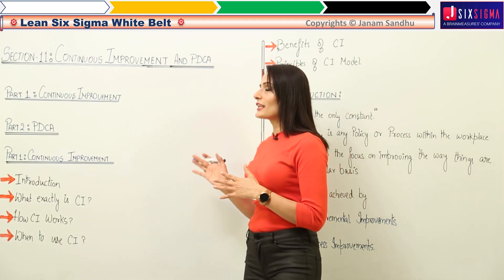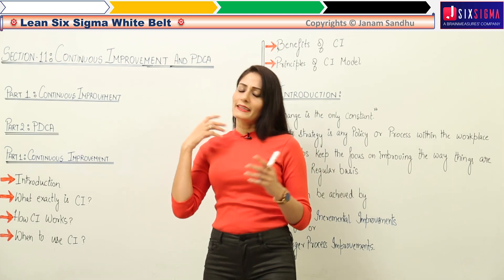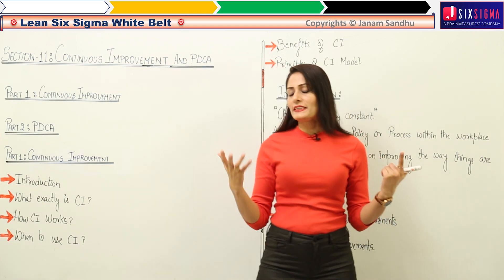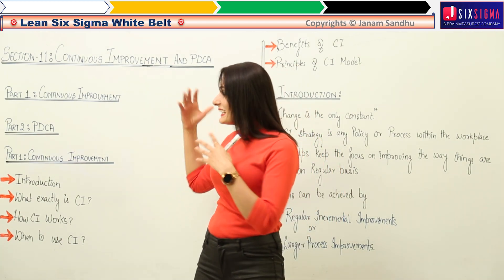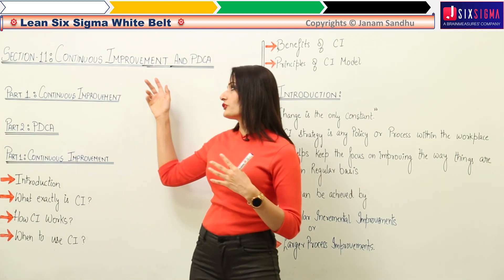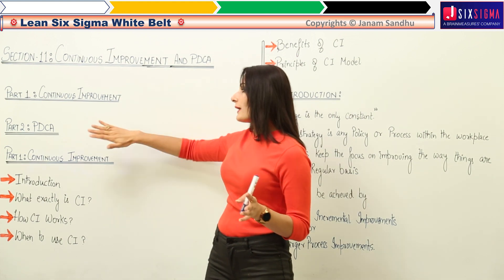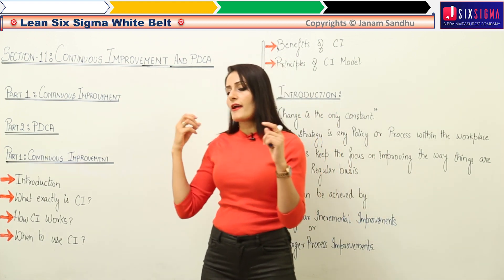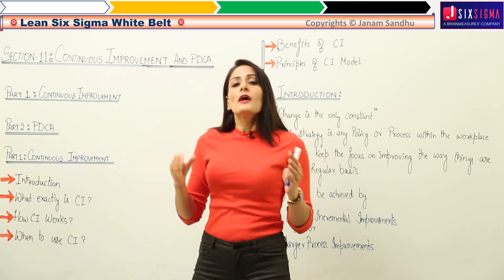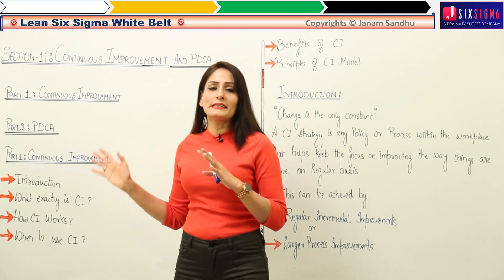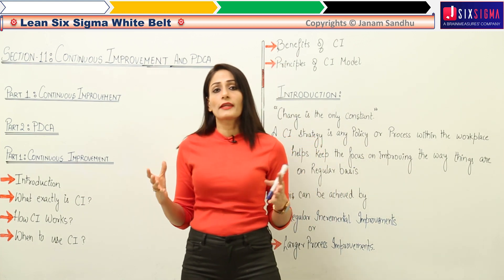Let's begin with Section 11: Continuous Improvement and PDCA. We can talk about continuous improvement, PDCA, and Kaizen all in one go. For ease of understanding, I've divided this section into two parts: Part 1 will cover continuous improvement, and Part 2 will cover PDCA. Most people think PDCA and Kaizen are very similar — PDCA is the backbone of Kaizen — but here I'll talk exclusively about PDCA: what it is, the Deming cycle, and all that.